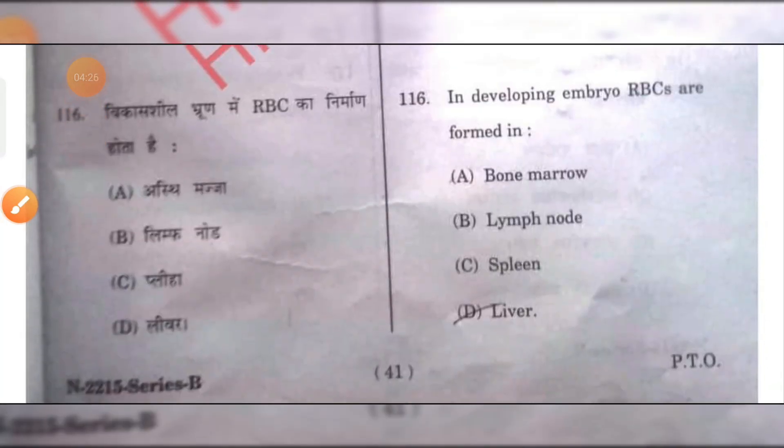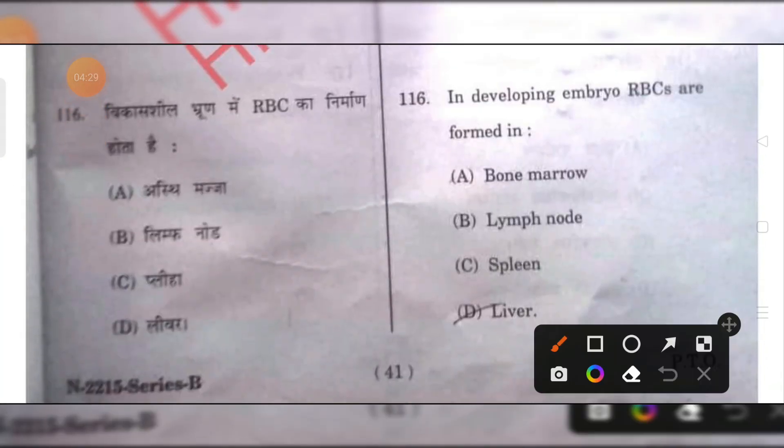In a developing embryo, RBCs are found in the liver. D is the right answer.